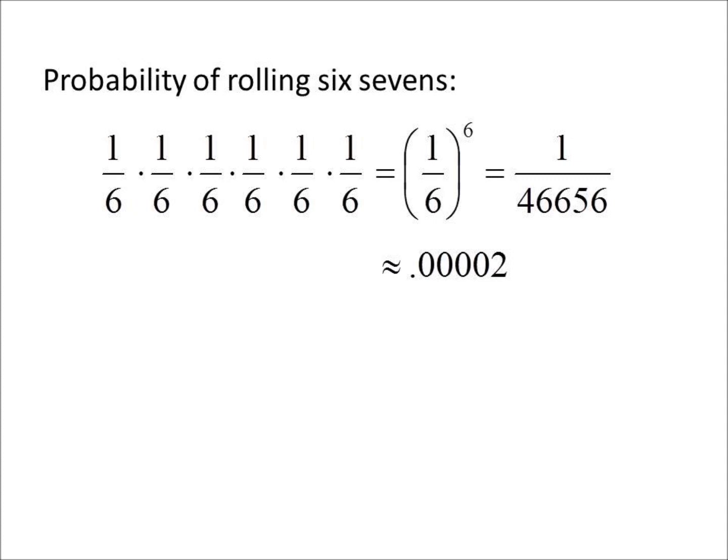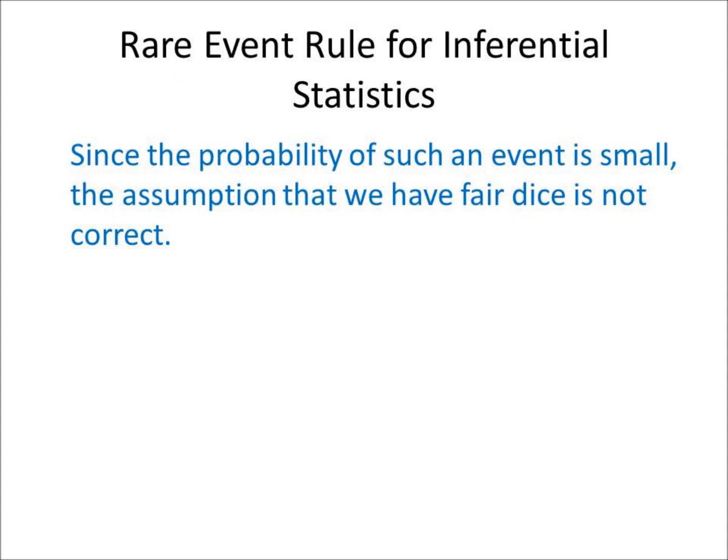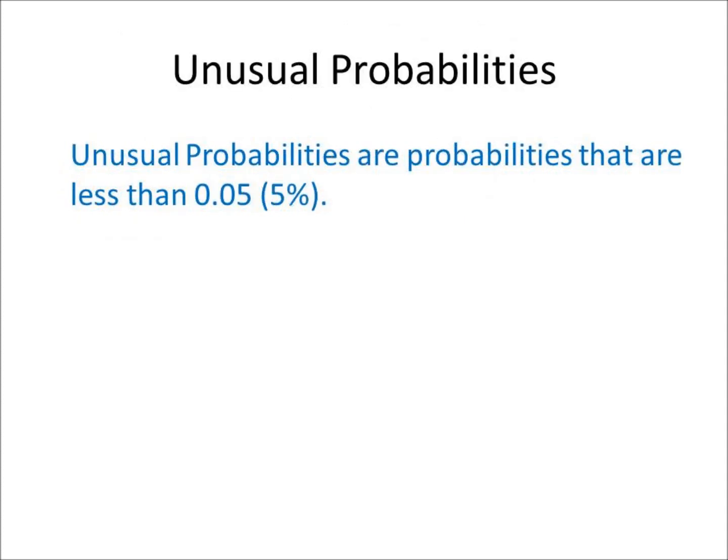So according to the rare event rule, since the probability is small, the assumption that the dice are fair is incorrect. There is a problem — we need a cutoff point. Everything above the value would not be unusual; everything below is unusual or rare. That value is 0.05, or 5%. Every probability equal to or above 5% is not unusual; every probability below 5% is unusual or rare.